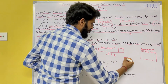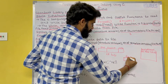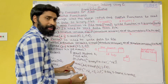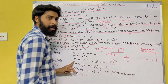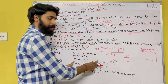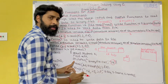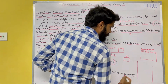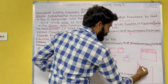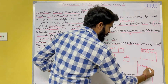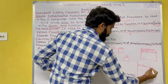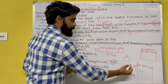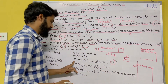We declare file pointer fp. Then fp = fopen("binaryfile.txt", "rb") — we open binaryfile.txt in read binary mode (rb). This file is opened in primary memory and it stores 123, Ravi, 45.67. Let us assume the starting address is 1010, so 1010 is assigned to fp.